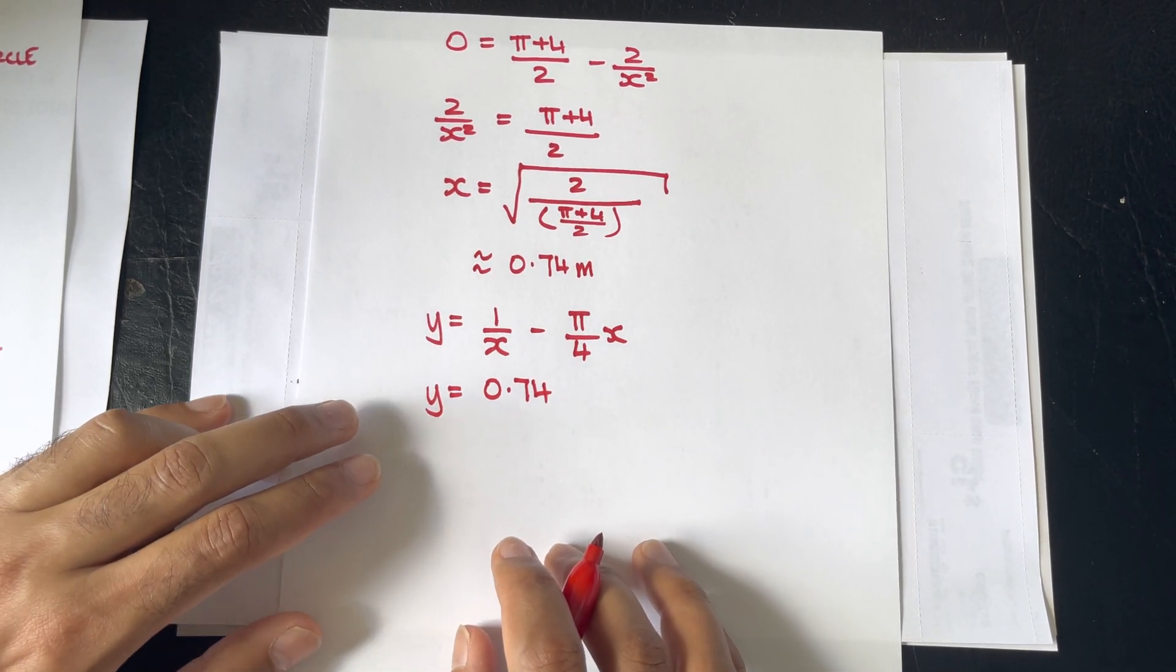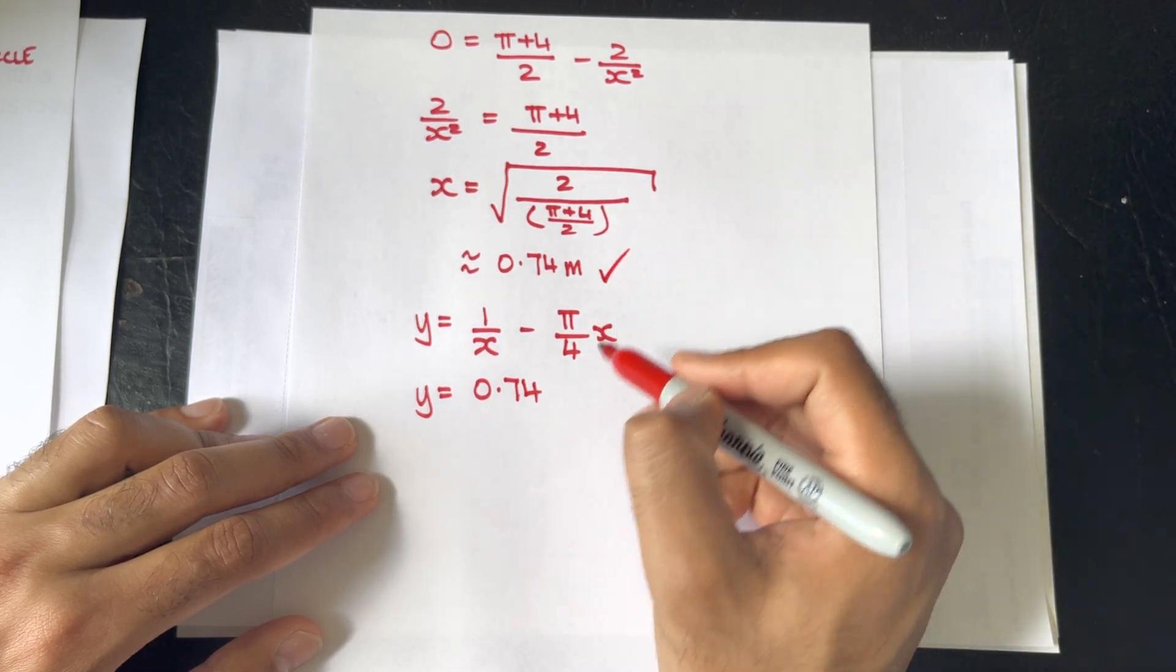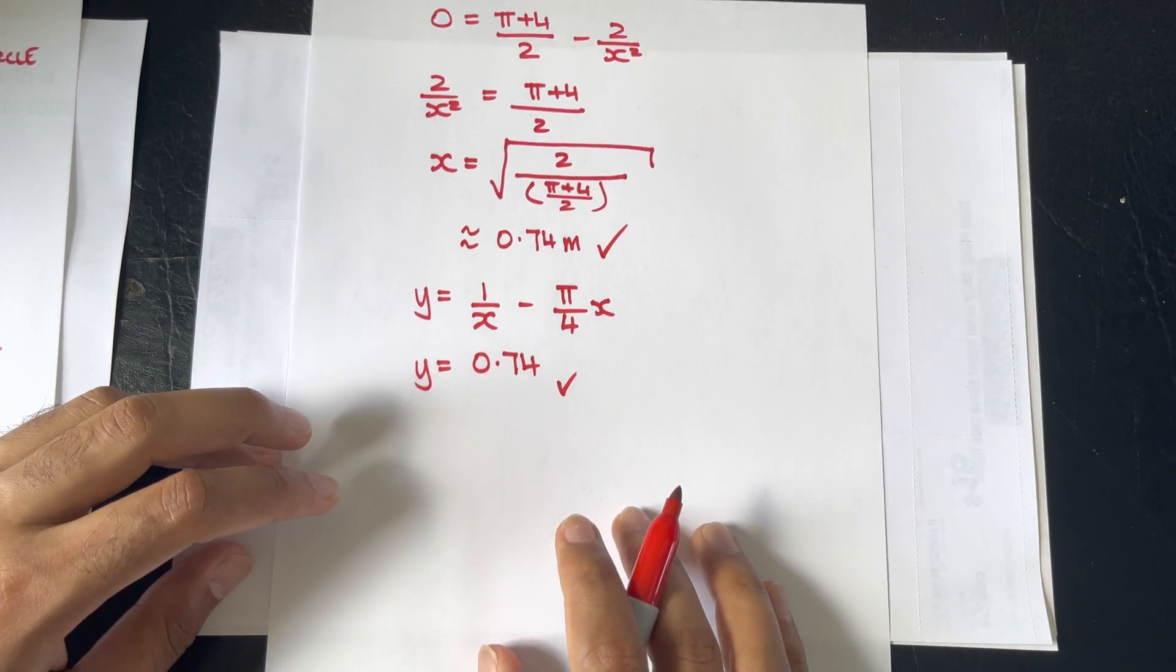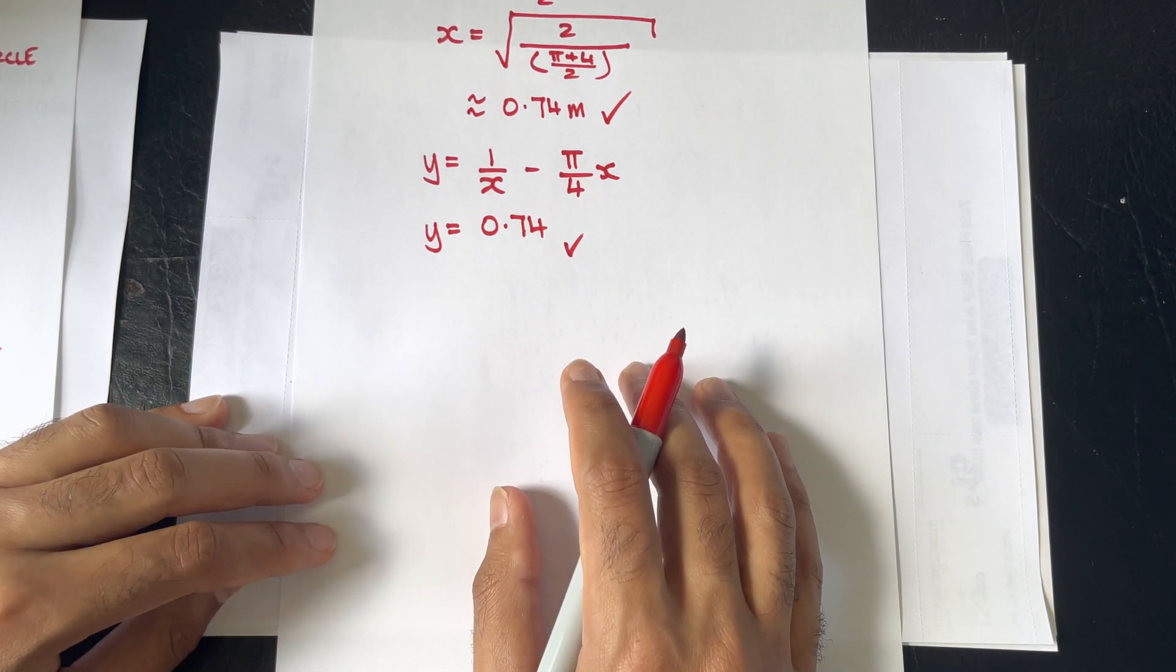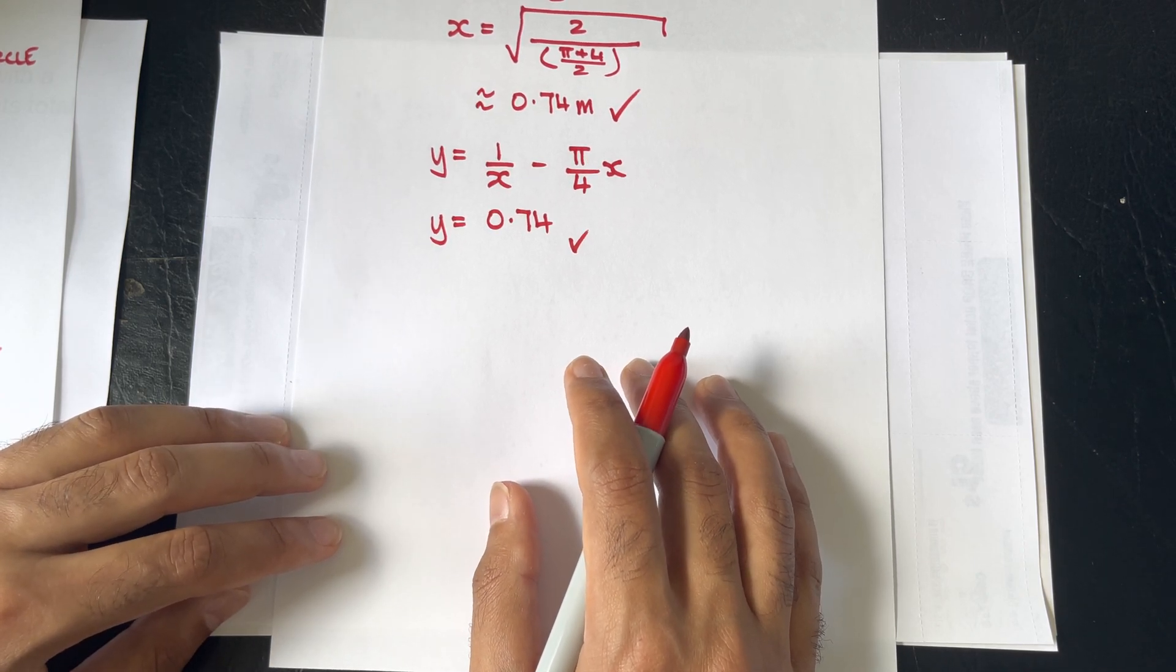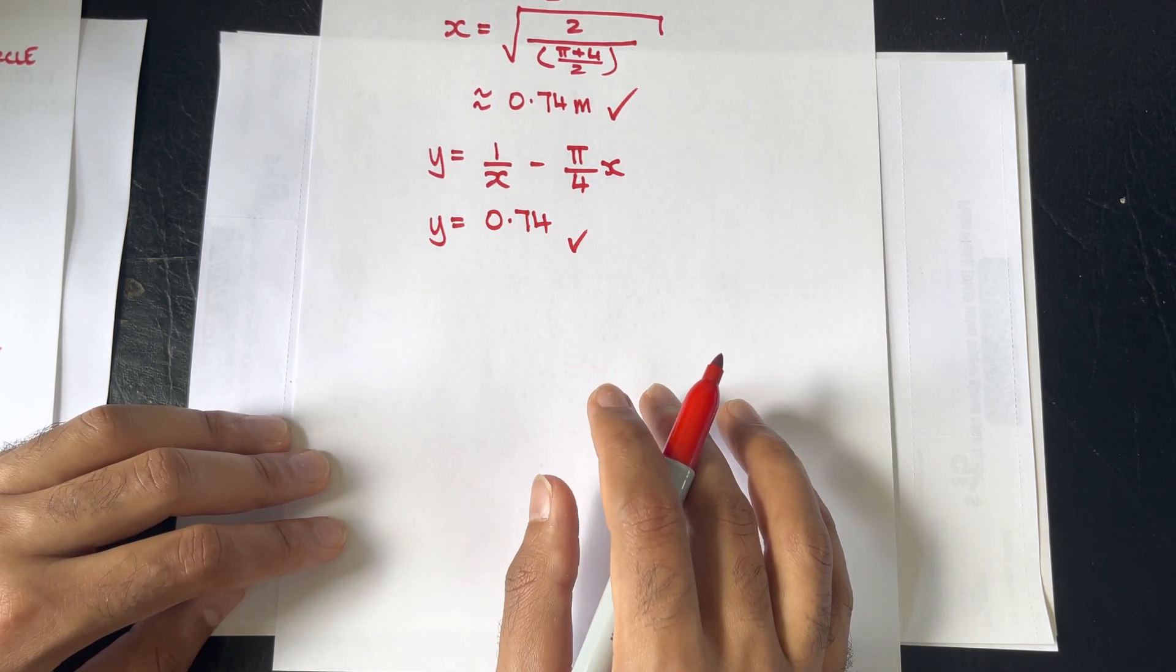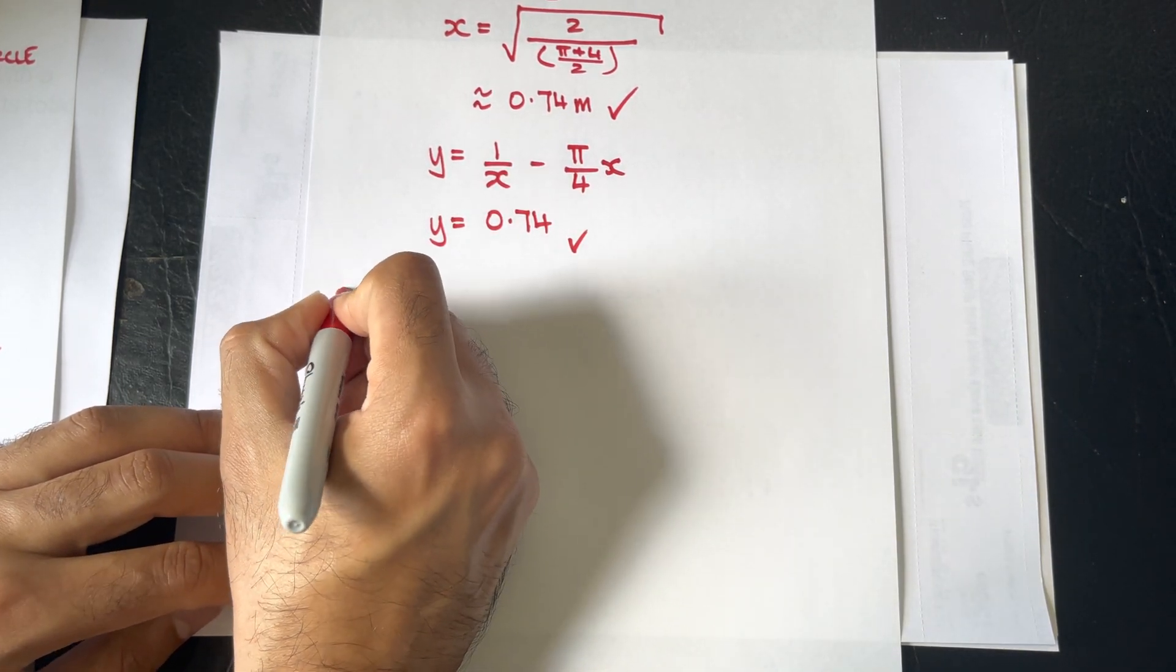Now, we have calculated for x up here, and y here, but that's not our answer. Our answer asks us to calculate, the question rather asks us to calculate the perimeter.